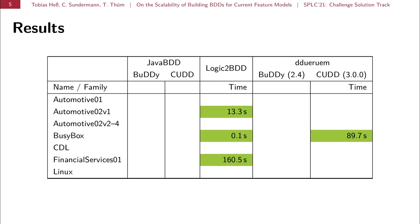namely Automotive 2 version 1, BusyBox and Financial Services 1. And you can also see directly that we looked into a number of different experiment setups. We used the infamous Java BDD, which has been used a lot in earlier research. We used the tool Logic2BDD from a paper from Fernandes Amorós et al. from 2020. And we employed our prototype own tool, which instruments the same BDD libraries as Java BDD, but in a more direct and more native fashion. In short, we were able to build BDDs for three feature models, but failed for 15. And we define a fail if the computation did not conclude in 10 minutes, which was our time limit.